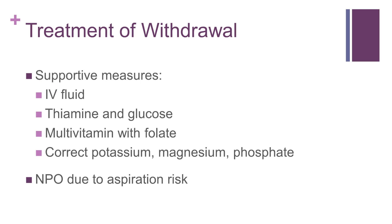When it comes to treating withdrawal, our goals are to attenuate the CNS excitation, thereby making the patient more comfortable, and also try to prevent seizures, metabolic derangements, and other more severe complications. Patients should be supported with IV fluids and nutritional supplementation. Thiamine, followed by glucose, should be given to correct deficiency and prevent Wernicke's encephalopathy. A multivitamin containing folate, in either oral or IV form, should also be administered. Alcoholic patients also frequently have low potassium, magnesium, and phosphate levels, so those should be measured and corrected as needed. Generally, we make patients NPO because they are at risk of seizure and aspiration.